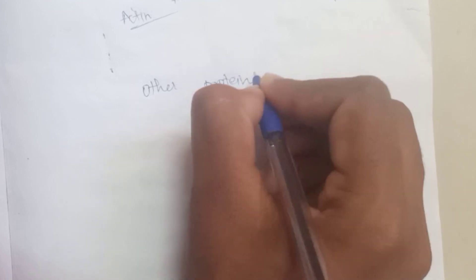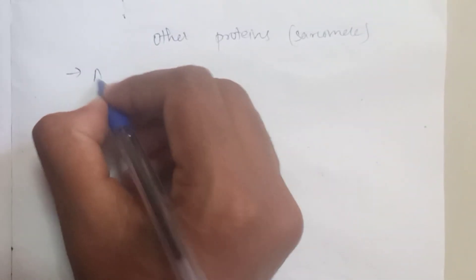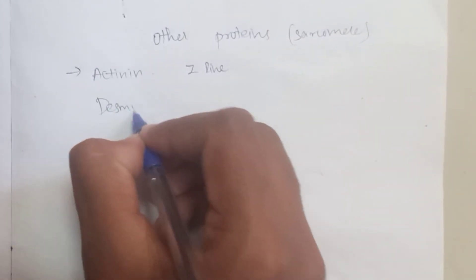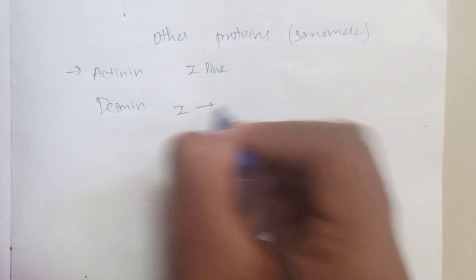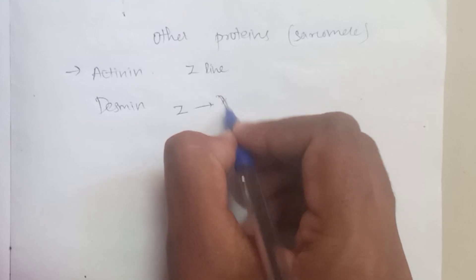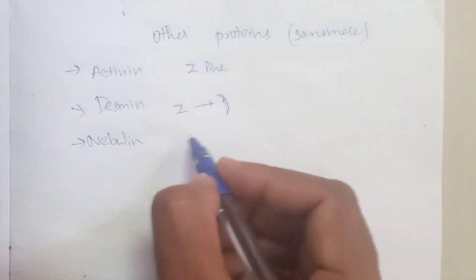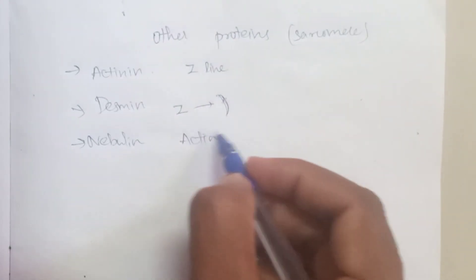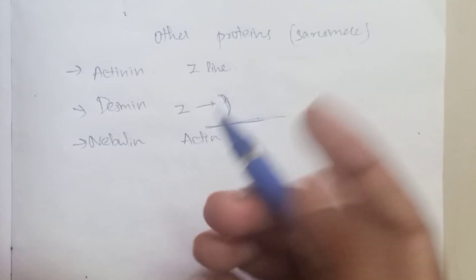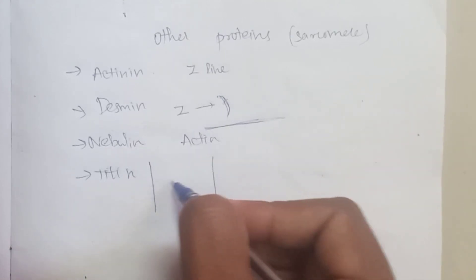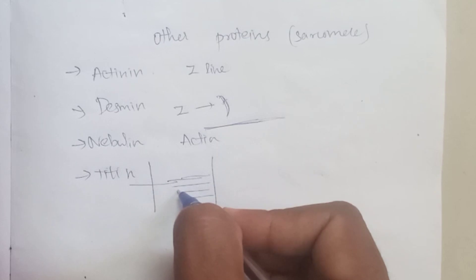These are the proteins in the sarcomere. First, we need structural proteins. Actin filament connects to the Z-line. Desmin connects to the sarcolemma. Nebulin runs along and closes up the actin filament. The protein titin connects from the M-line to the Z-line.